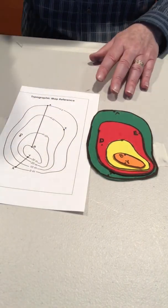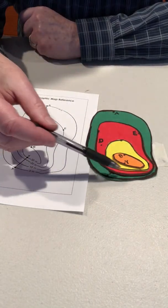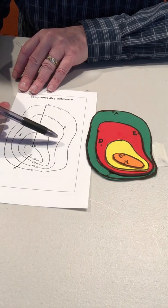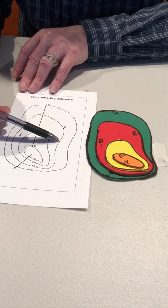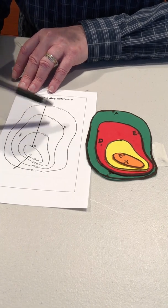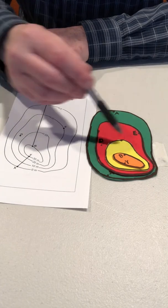So once they have this, they have their three-dimensional landform, and the two-dimensional map with these lines called contour lines. Incidentally, the students don't have to know the term contour line, although it's useful to use that in conversation, to figure out the patterns.